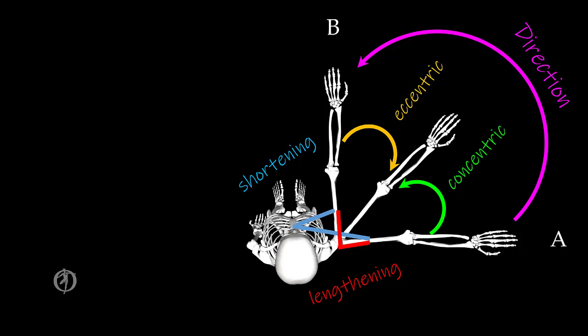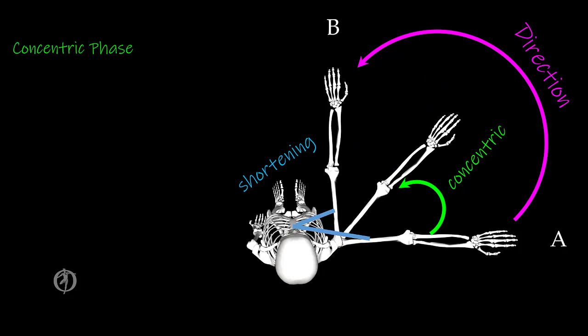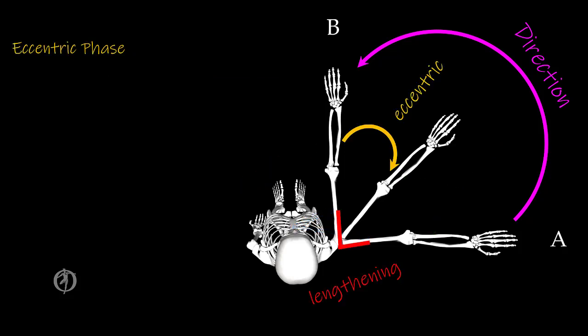The difference now is going to be in terms of how this movement is being controlled. During the concentric phase of the activity, the MTCs that are shortening are going to control the movement — this is no different from the muscle control formula we applied before. During the eccentric phase of the movement, the MTCs that are lengthening are going to end up controlling the movement. The only difference here is that now we see both concentric and eccentric control during the same activity: during the first portion of the movement when we are speeding up, it's controlled concentrically, and then during the second phase when things are slowing down, things are controlled eccentrically.